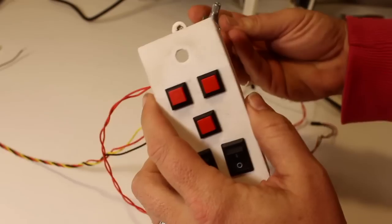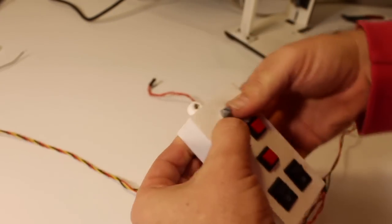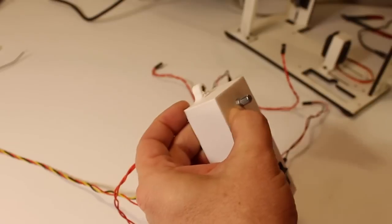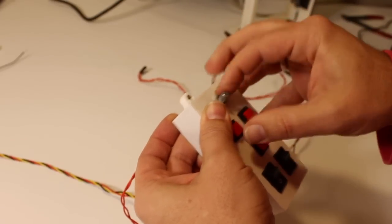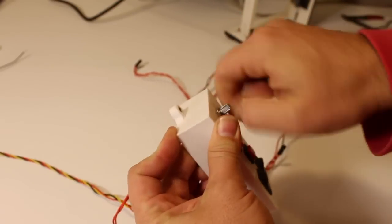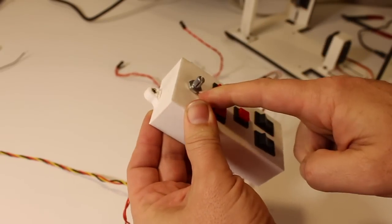And then push the potentiometer in from behind and tighten it down with the nut. This is the skinny nut that comes with the potentiometer.